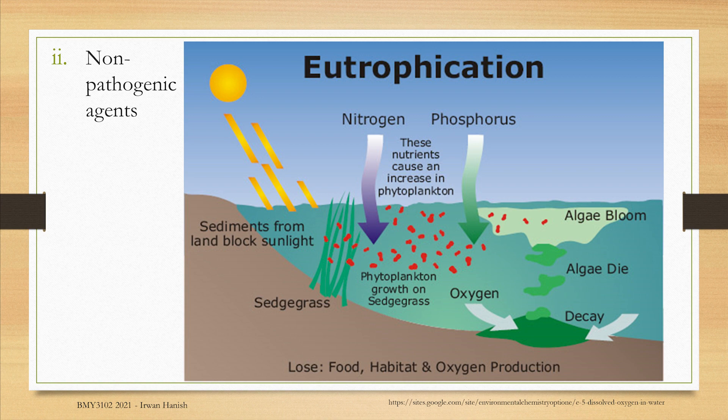Secondly, when they die, oxygen in water is used as part of their decomposition. When too much of this happens, oxygen runs out, which is bad because aquatic organisms like fish will die off. Anaerobic decomposition will also take place, leading to production of ammonia and phosphines, which cause terrible smell and poisoning of the water.